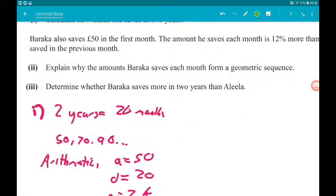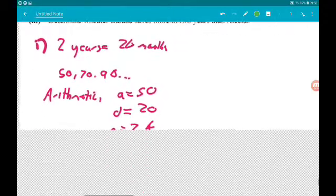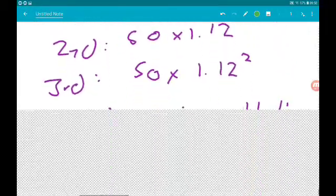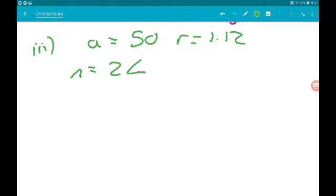Okay, then part three for three marks wants us to determine if Baraka saves more in two years than Aleela. So we know it's geometric. We know that a is 50 and r is 1.12. N is 24.